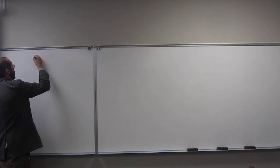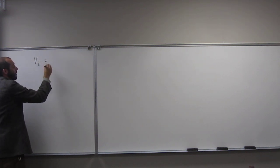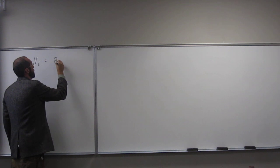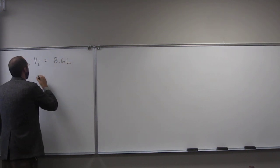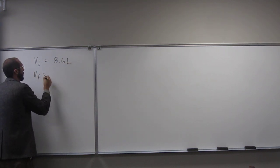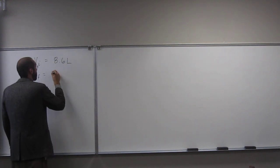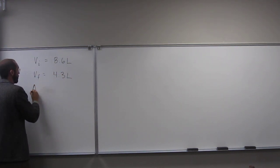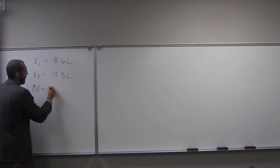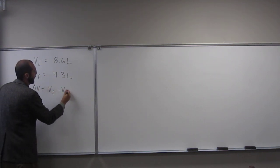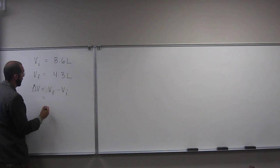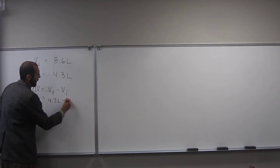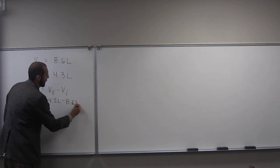We know the initial volume, right? What is that? 8.6 liters. And we know the final volume, which is 4.3 liters. So the change in volume is going to be VF minus VI. So 4.3 liters minus 8.6 liters.